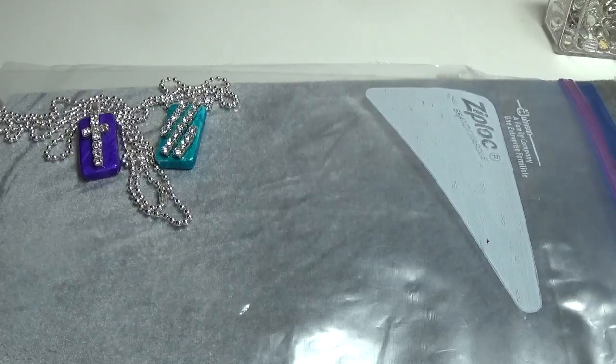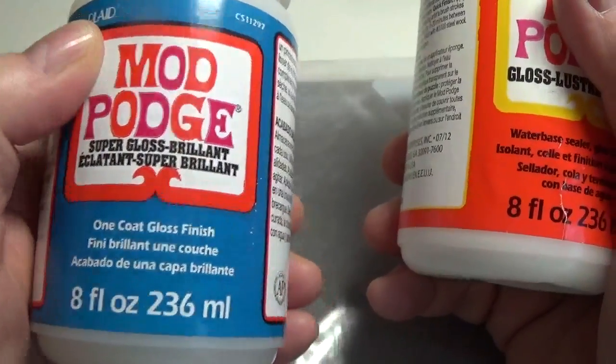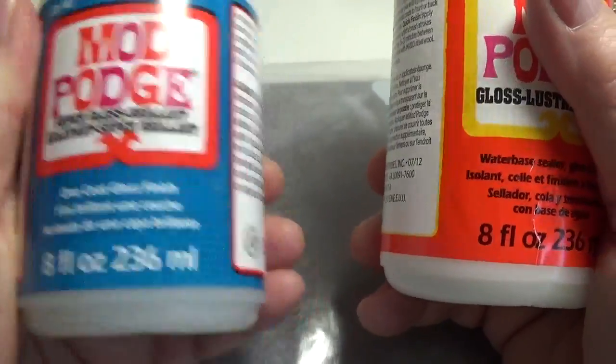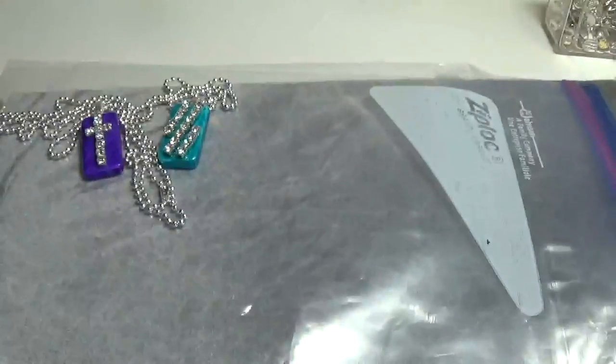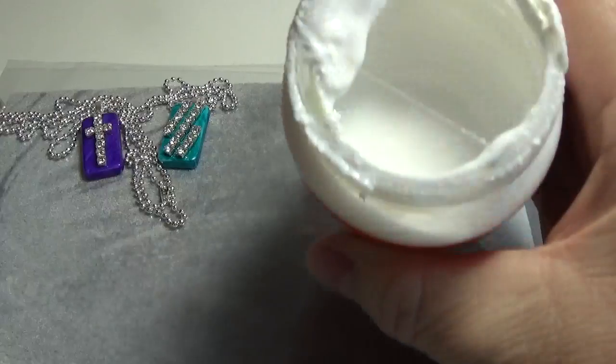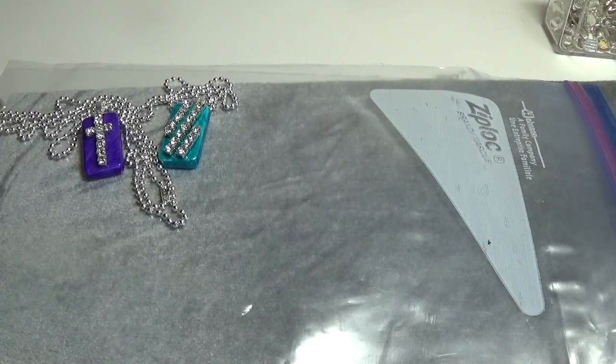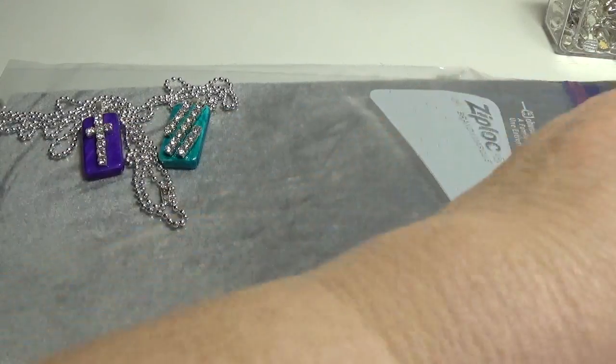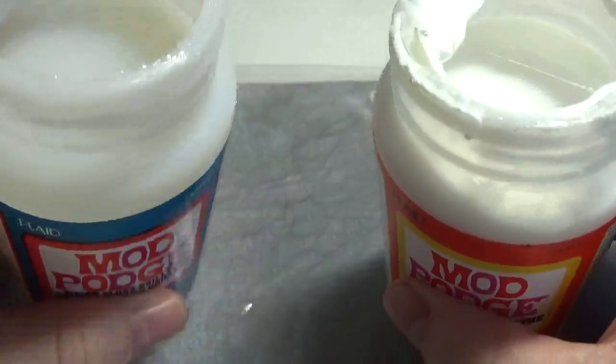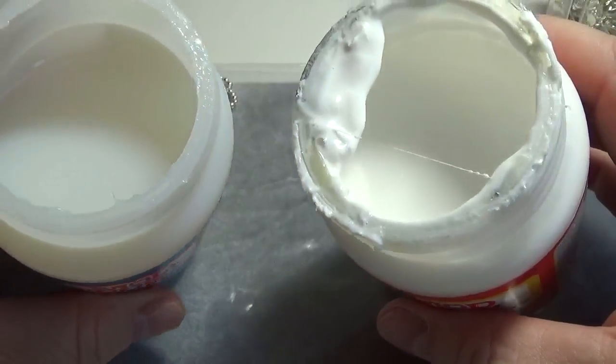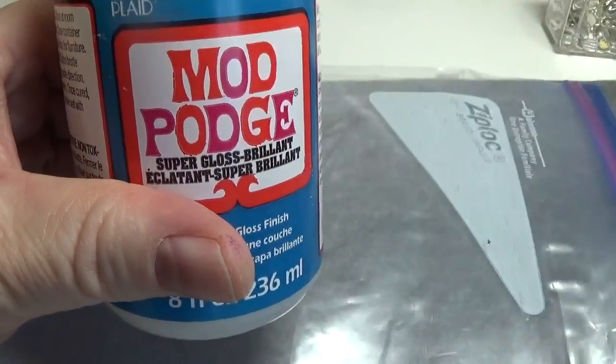Now the Mod Podge, I want you to notice the difference. This is the stuff you need. I bought this at Walmart for $5.27, I think. Don't get this kind. Don't get the kind that looks like glue, see the white? Don't get that kind. This is completely different. This is a gloss finish. I don't know if you can see the difference on camera, but I can. This is a gloss finish and this is more like glue. So this is the one you want.